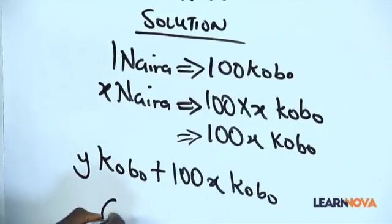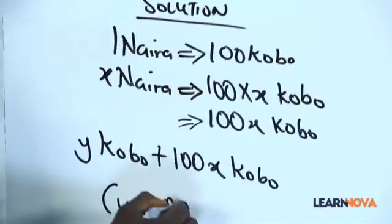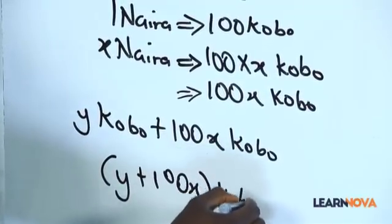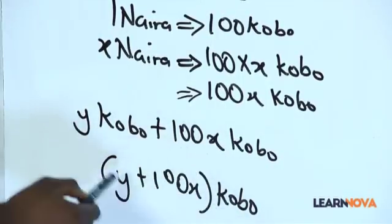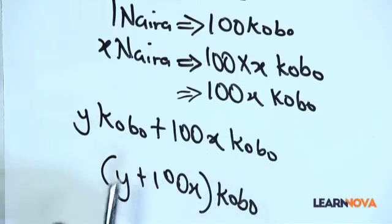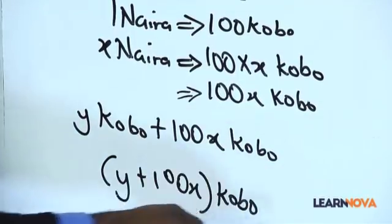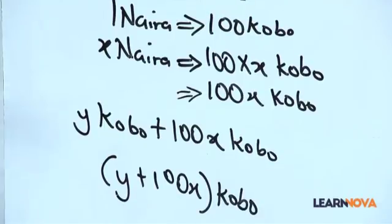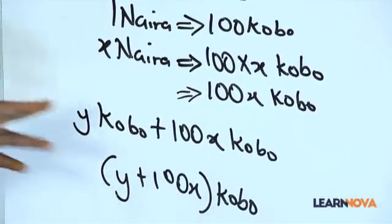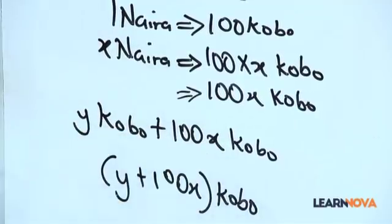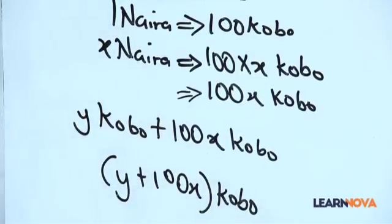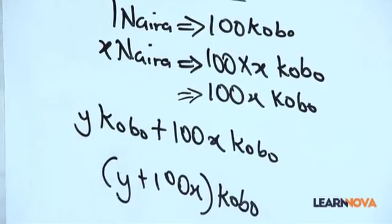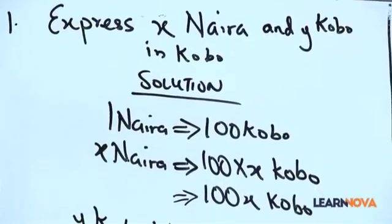Now we add Y Kobo to it. So at the end of the day, we have Y Kobo plus one hundred X Kobo. Since both terms have Kobo, we put them in a bracket: the final answer is (Y + 100X) Kobo. We've been able to answer the question — express X Naira and Y Kobo in Kobo.